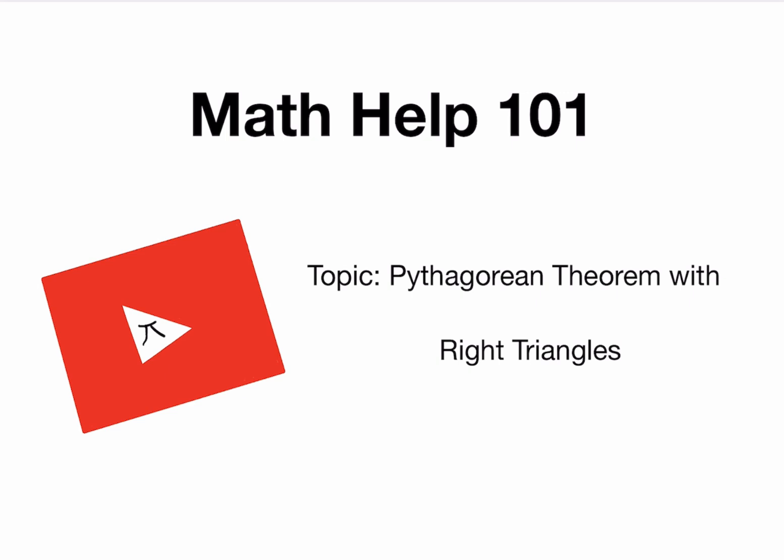Today's topic is the Pythagorean Theorem with right triangles, specifically right triangles, so we want to remember that. A right triangle is just this: a simple triangle, obviously three sides, but it has a right angle, or in other words, a 90 degree angle.